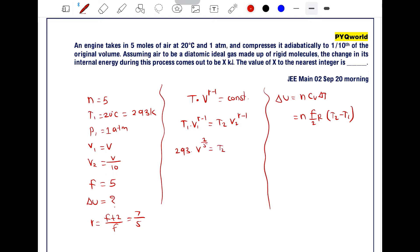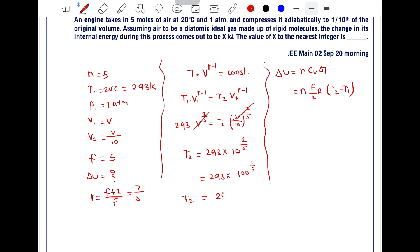So 293 V^(2/5) = T2 (V/10)^(2/5). The V cancels out. T2 = 293 × 10^(2/5) = 293 × (10^2)^(1/5) = 293 × 100^(1/5). Solving this gives T2 = 736 Kelvin.